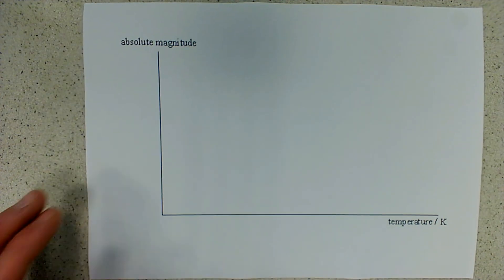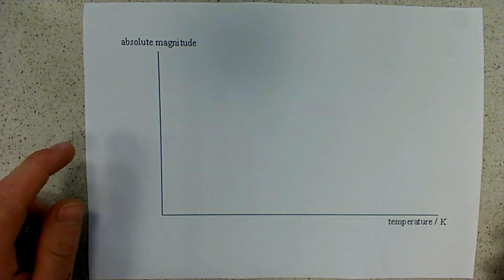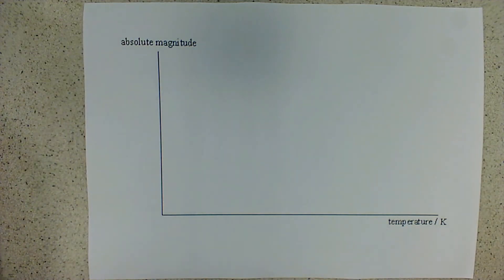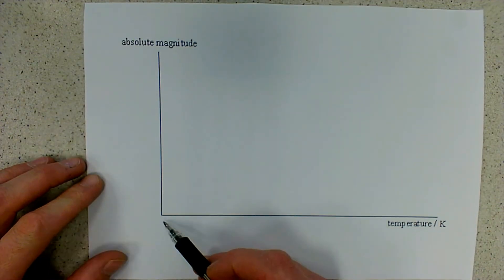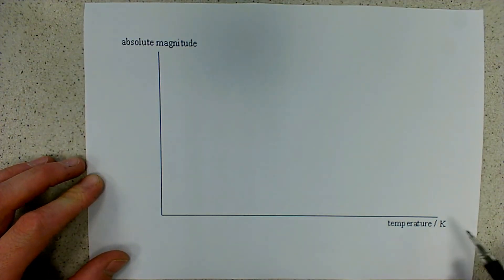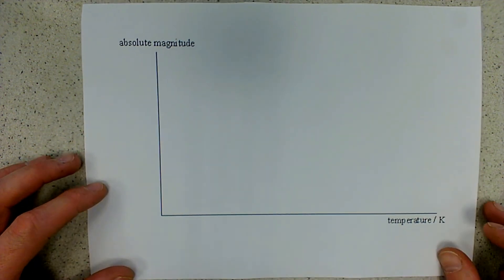When you are marking up your graph the first thing to remember is that it's not a graph in the truest sense of the word, so you're not going to start with zero and make your way up to a larger number. It's more of a diagram that represents different types of stars.